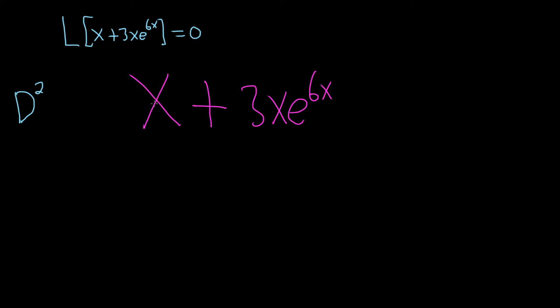Because if you differentiate it once, you get 1. If you do it again, you get 0. So it's always 1 higher. So if you have, like, x cubed, you need d to the 4th. If you have x to the 5th, you need d to the 6th.